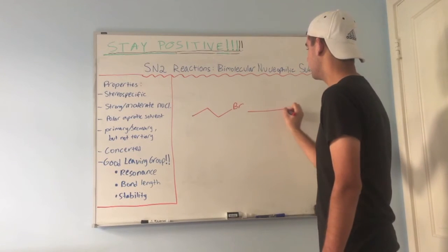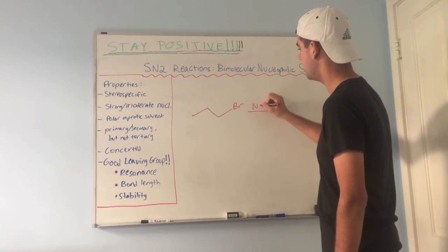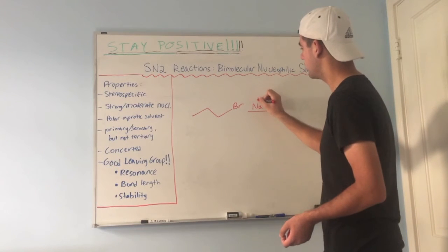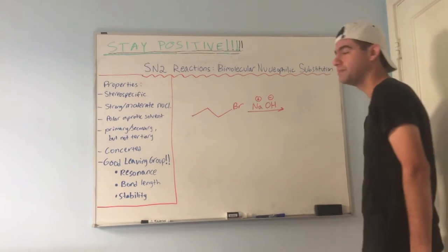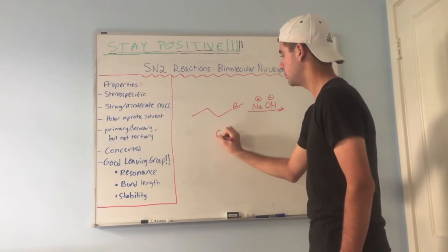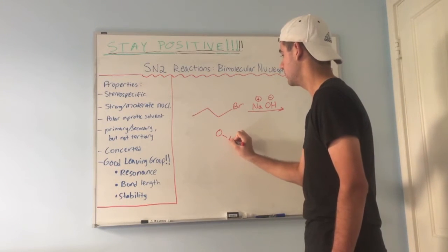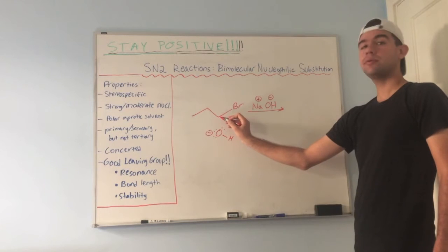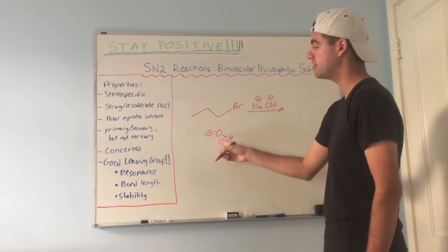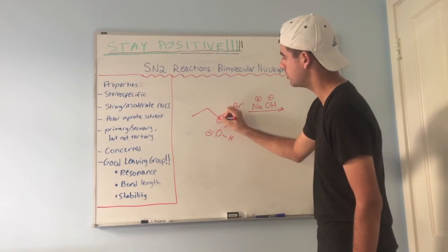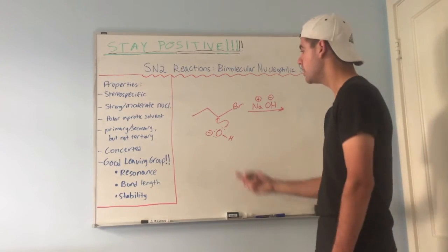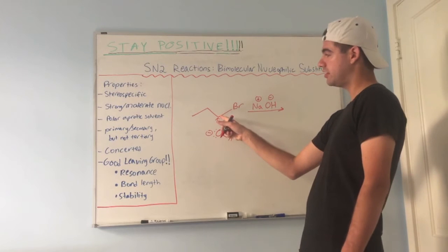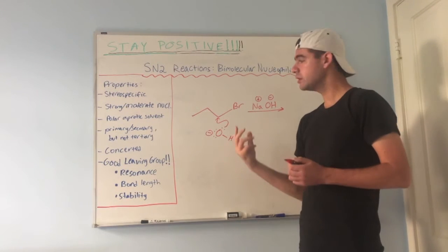So now let's introduce a strong nucleophile — we'll learn why it needs to be strong later. Let's put this in NaOH. The Na is positively charged, the OH is negatively charged. Let's isolate that OH — it has a negative formal charge. This carbon is an electrophile, so this very good nucleophile will attack. Curved arrows represent the movement of electrons, so the OH is going to attack this electrophilic carbon.